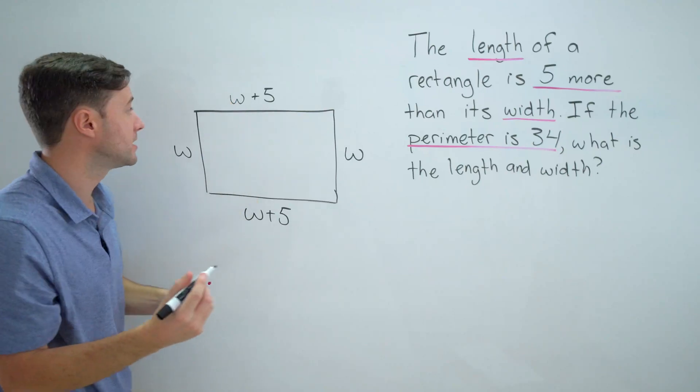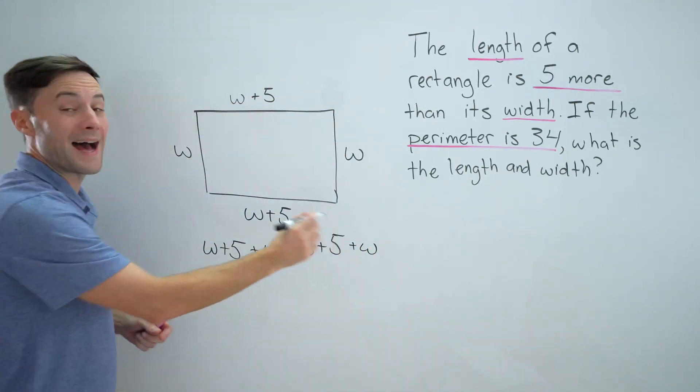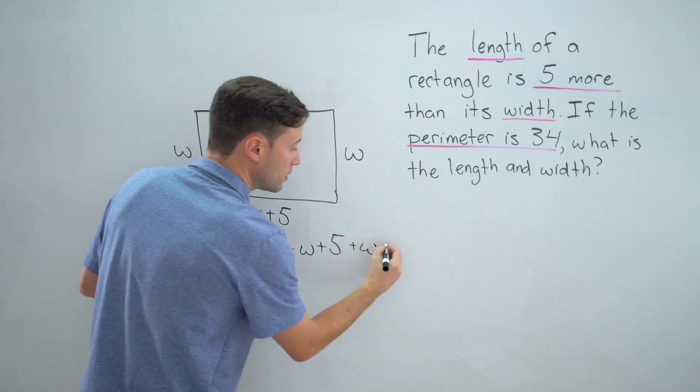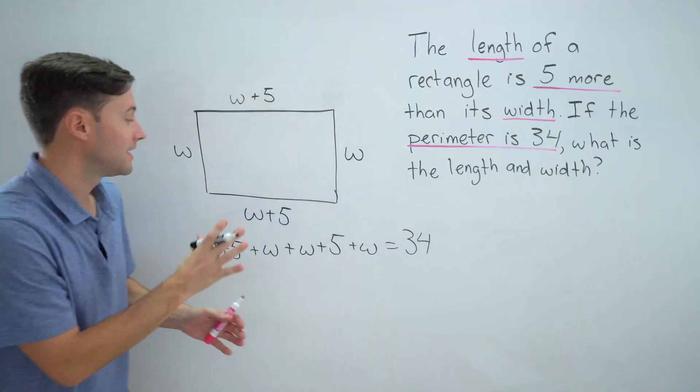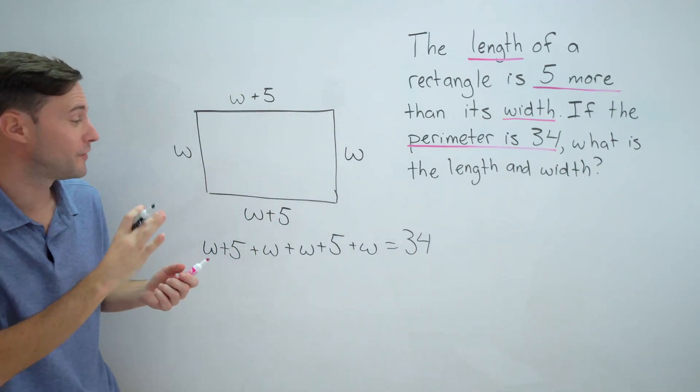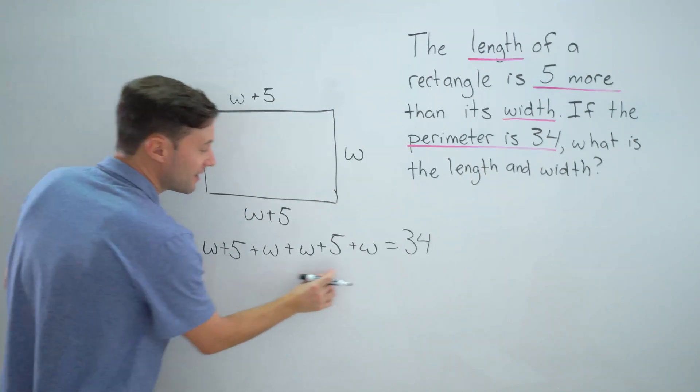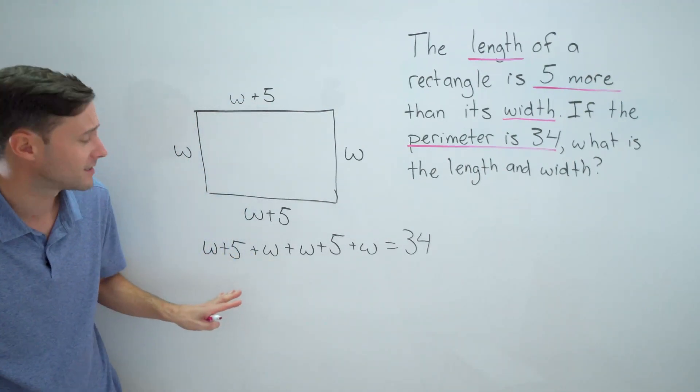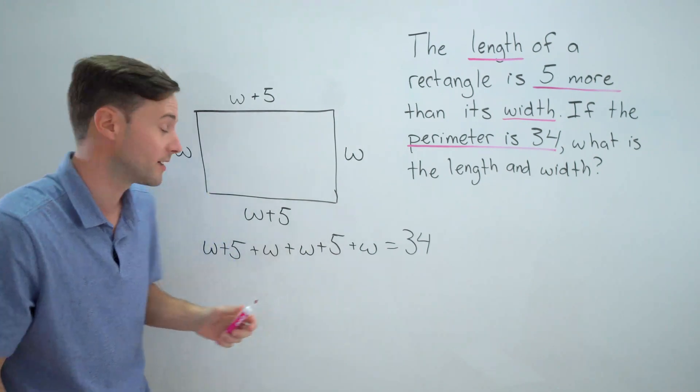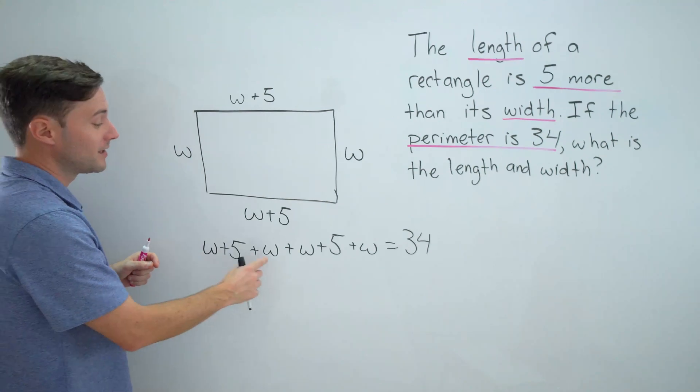So now let's write our equation. I just need to add all these up and all of that has to equal 34 because that's what the perimeter is. If you watch the previous video, you'll know that instead of starting to solve anything here, I want to clean this up. I want to combine like terms to make my life easier.